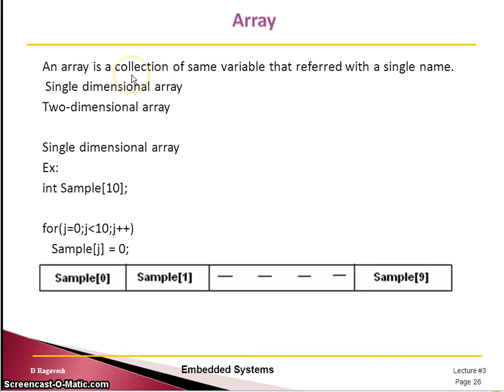Array is actually a collection of same variables that are referred with a single name. Like if I want to store maybe 10 integers, but I want to access with the same name. You can see the name is same, only the index changes. The initial values like sample of 0 and 1, it goes up to sample of 9. From 0 to 9, it's total 10 values. For accessing the array, we need to use looping. Looping and array go hand in hand. Whenever we need to use arrays, we have to use the looping method.